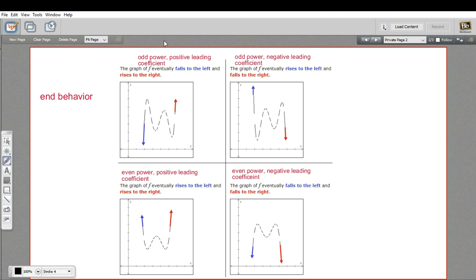It's going to be down on the left and up on the right if the leading coefficient, so that highest power of x, if the coefficient of that is positive, you're going to have down on the left, up on the right. The opposite if it's negative: up on the left, down on the right.